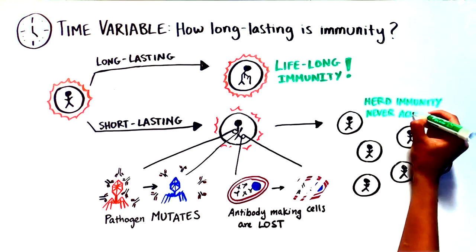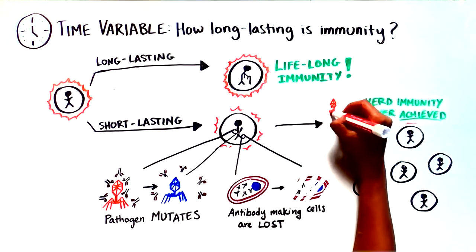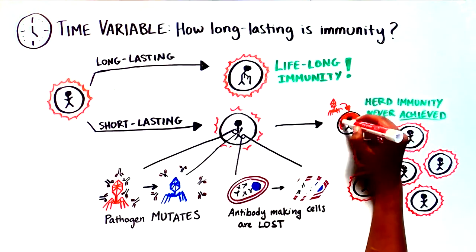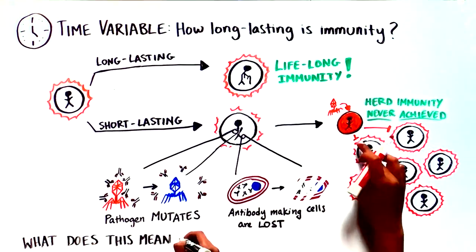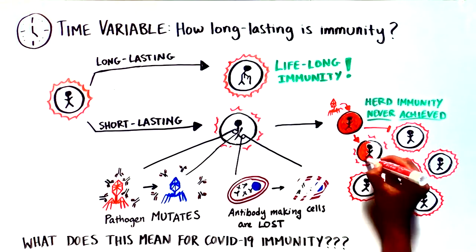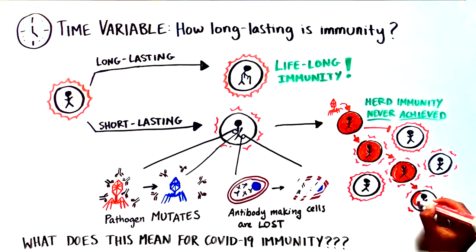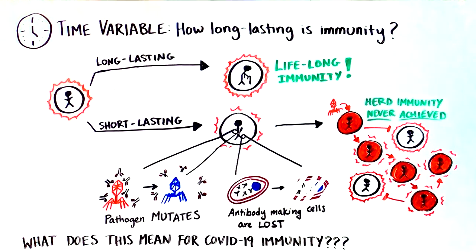Short-lived immunity means that, in some cases, herd immunity cannot be achieved because there is always a large proportion of the population that is susceptible. For COVID-19, we don't know yet, as we are still trying to understand how long natural immunity to SARS-CoV-2 lasts and whether we can elicit long-term immunity with a SARS-CoV-2 vaccine. Long-term immunity is key to determining if herd immunity will be protective for COVID-19.